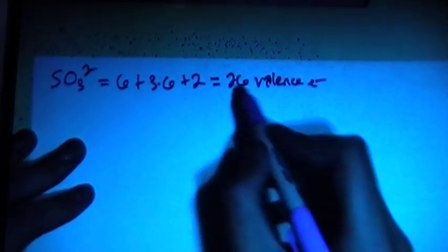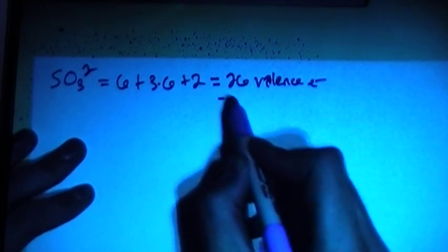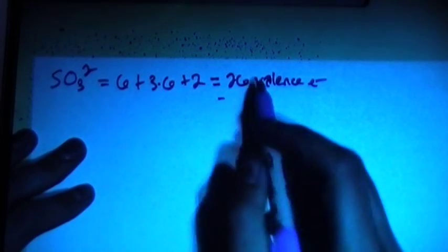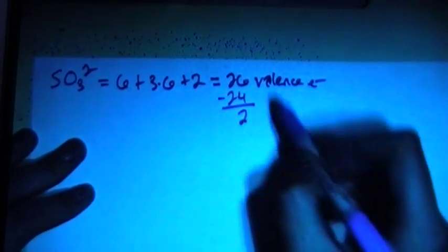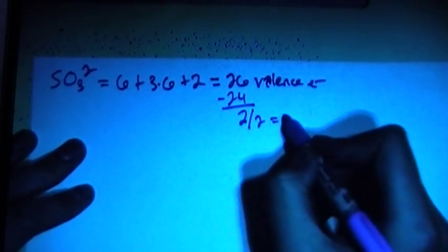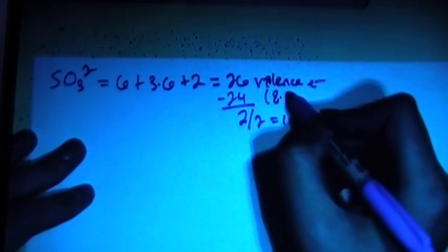And we can go ahead and do my trick where you subtract the largest multiple of 8 out of this 26 total, so it's 24. That gives you 2 remaining, and to divide that by 2 gives you 1, and 24 is 8 times 3.